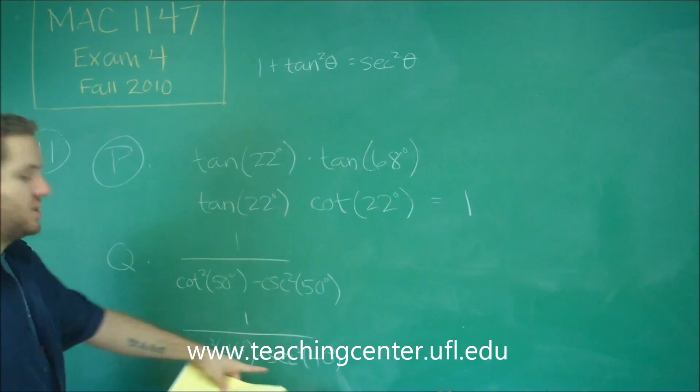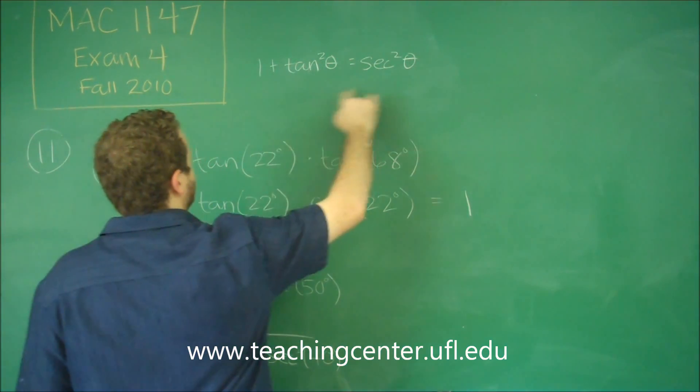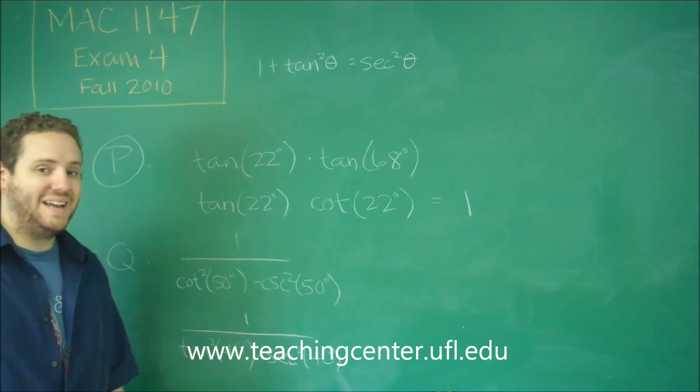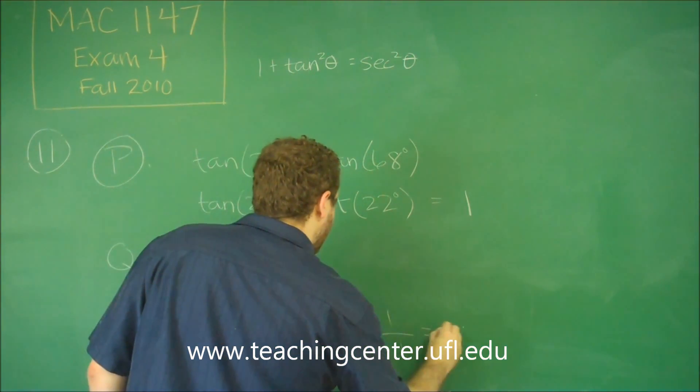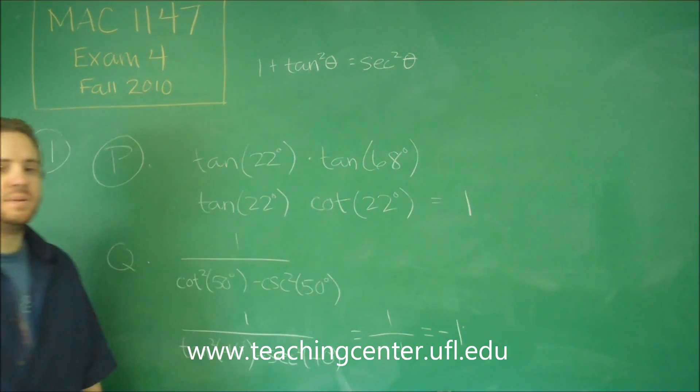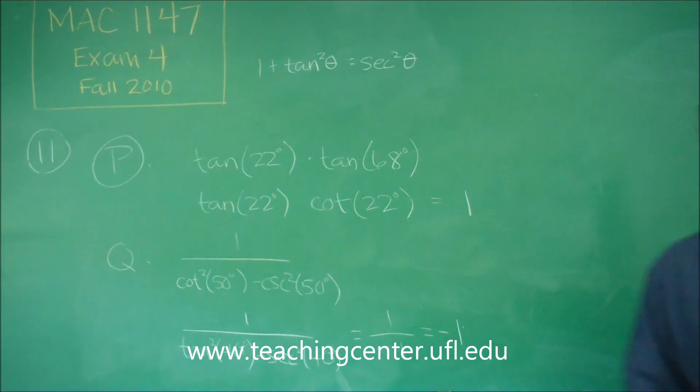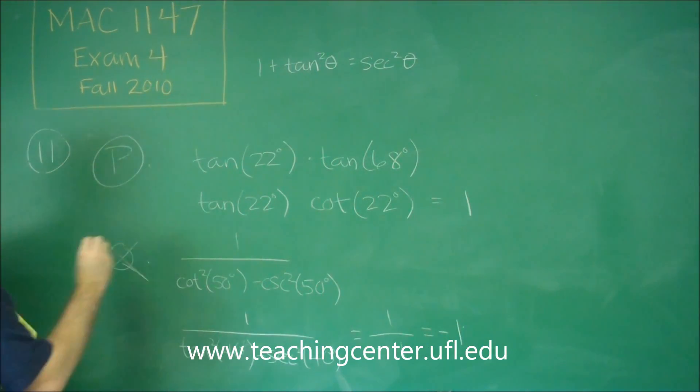So you can see here, if we wanted to get tan squared minus secant squared, we'd have to subtract this over and move the 1 to the other side, which would make this all on the bottom equal to negative 1, which means that that statement is equal to negative 1, not 1. So Q is not equal to 1. That's not what we want for this problem.